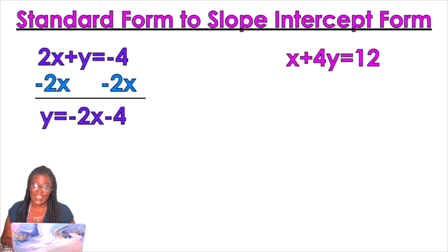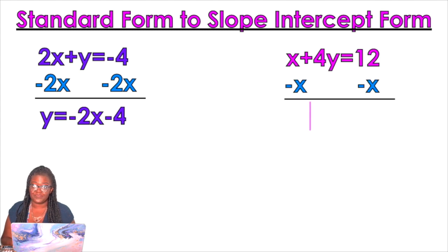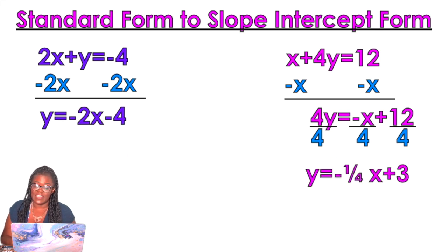And then we're gonna do x plus 4y equals 12. Again, you want to get y by itself. So we're gonna subtract x from both sides. We're gonna get 4y equals negative x plus 12. But then to get y by itself completely, you want to make sure that you divide by 4. So that's gonna give you y equals negative 1 fourth x plus 3.